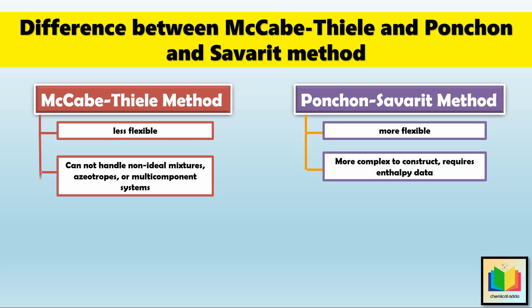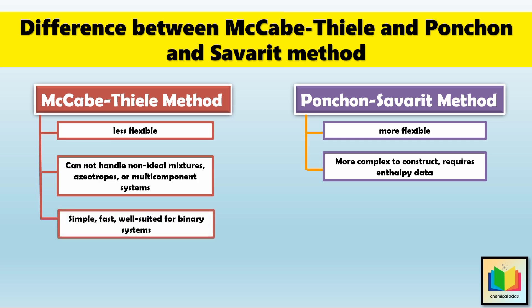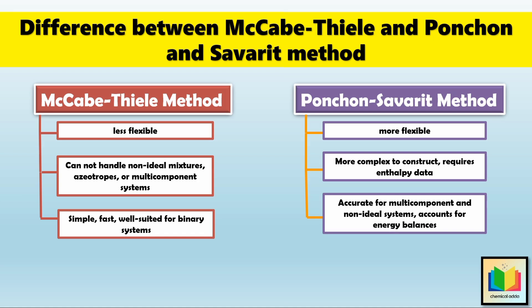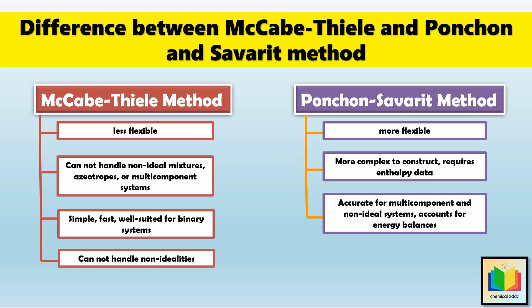Regarding advantages: the McCabe-Thiele method is simple, fast, and well-suited for binary systems. The Ponchon-Savarit method is accurate for multi-component and non-ideal systems and accounts for energy balances. On the handling of non-idealities: the McCabe-Thiele method is limited to ideal systems and doesn't work well when there are azeotropes or complex component interactions. The Ponchon-Savarit method is better at handling non-ideal systems — it can handle deviations from Raoult's law, azeotropes, and complex behavior in multi-component systems, making it a better choice for more complicated distillation processes.